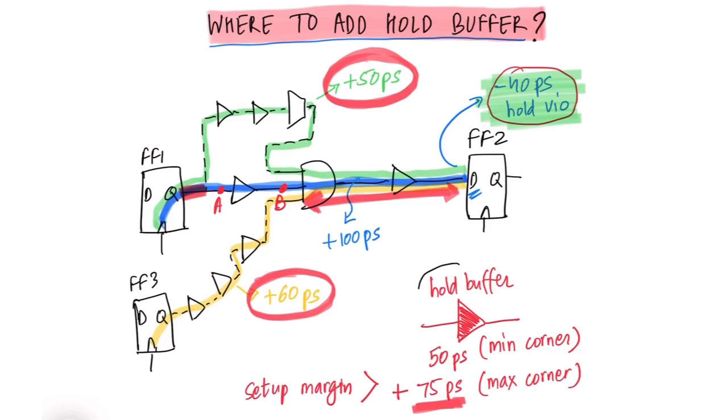So whenever inserting buffers for hold fixing or even setup fixing on data path or on clock paths, we always prefer to add the buffers in the location which is least disruptive to any other timing paths in the design.